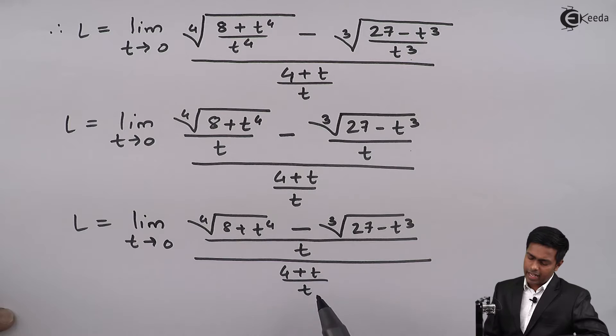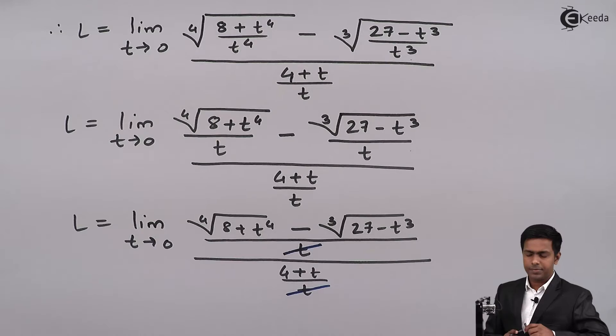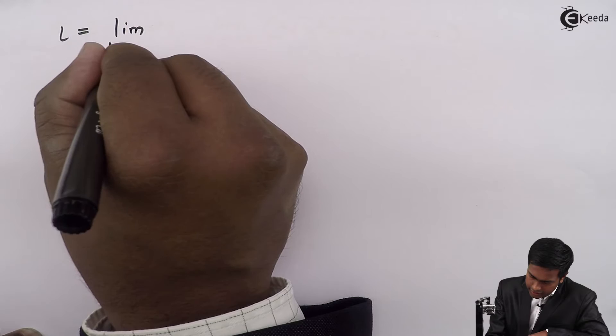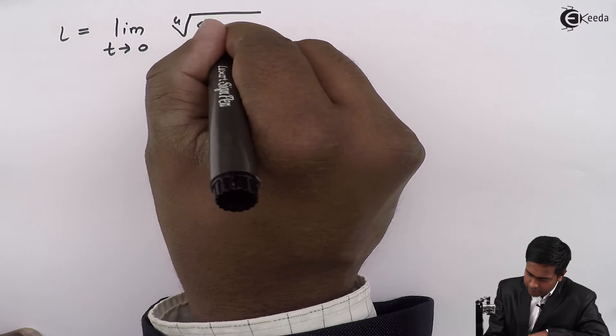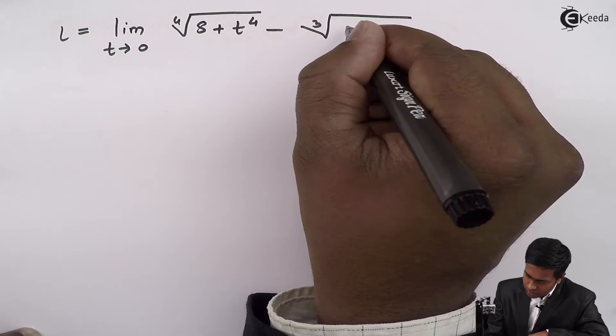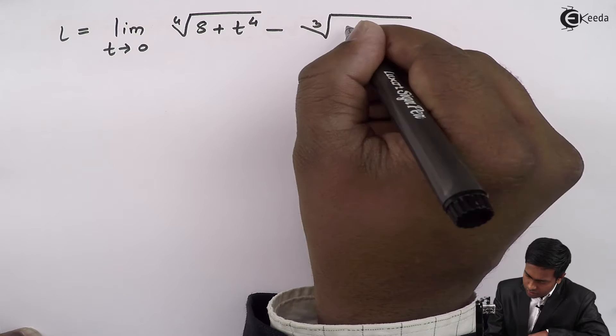We can cancel t from numerator and denominator. So L equals limit t tends to 0 of [4th root of (8 + t⁴) minus cube root of (27 - t³)] upon (4 + t).